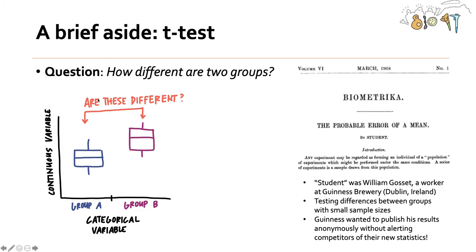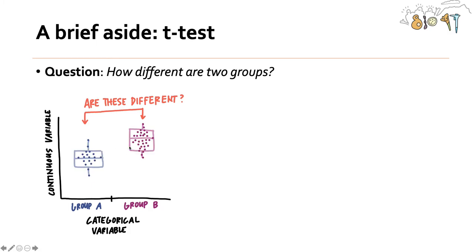You can think about this through my diagram here, where you have a categorical variable with two groups — group A and group B — and you're measuring some continuous variable, so you want to know: are these different? These are just box plots. The box plots are made up of all the individual data points, all your individual observations.